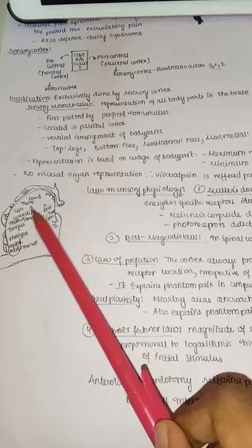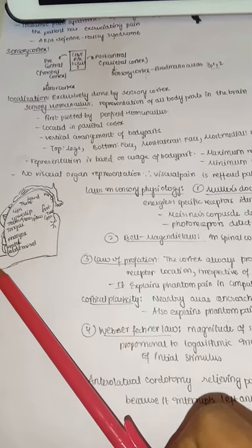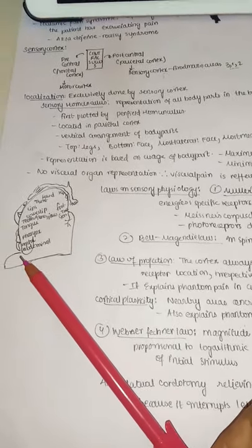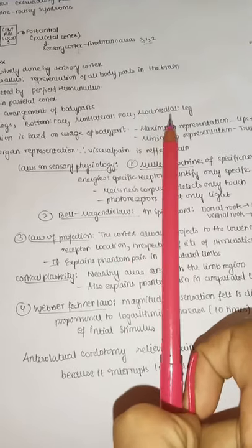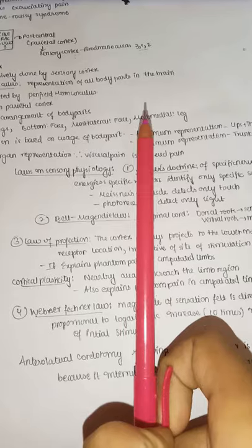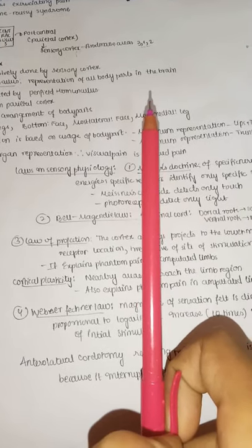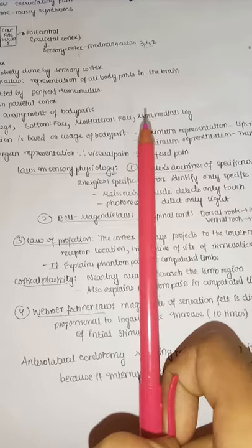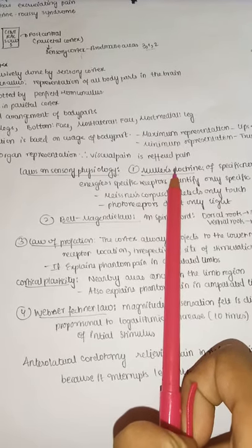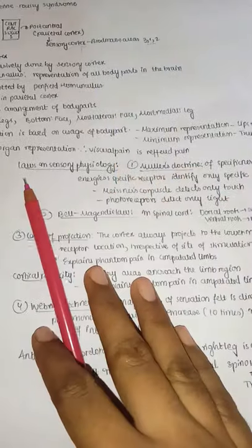Visceral pain is always referred pain — for example, heart pain may be felt in another part of the body, not at the exact location. This is because visceral organs have no direct representation in the sensory cortex.